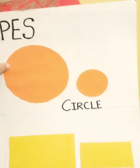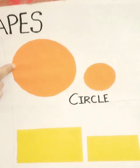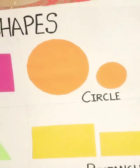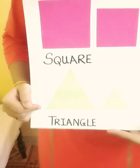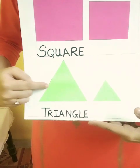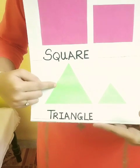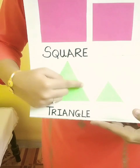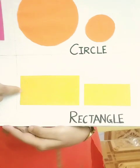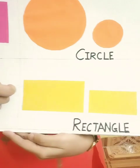This is a circle and the circle goes round and round. It has no sides. And the triangle — it has three sides: one, two and three.